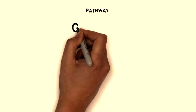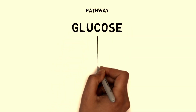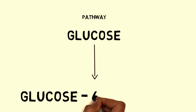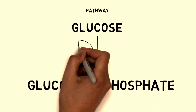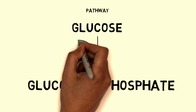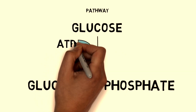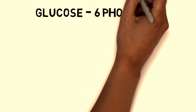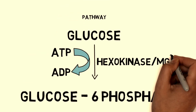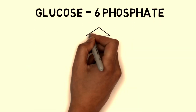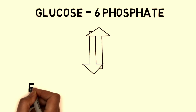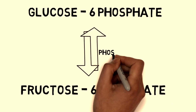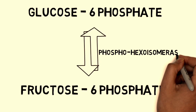Now let us discuss the pathway in detail. The pathway starts from glucose, where glucose is converted to glucose 6-phosphate. ATP is converted to ADP in this step, and the enzyme used here is hexokinase, with magnesium used as a cofactor. In the next step, glucose 6-phosphate is converted to fructose 6-phosphate, and the enzyme responsible is phosphohexose isomerase.